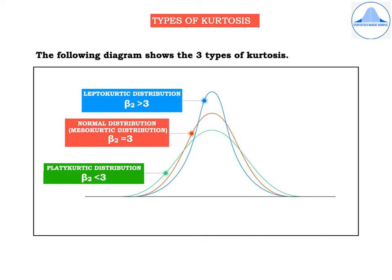I will now explain the different types of kurtosis observed in a distribution. The following diagram shows three types. The first one, shown in blue, is called a leptocurtic distribution. For a leptocurtic distribution, the peak of the curve will be very high and β2 will be greater than 3. The leptocurtic curve is denoted in blue color.